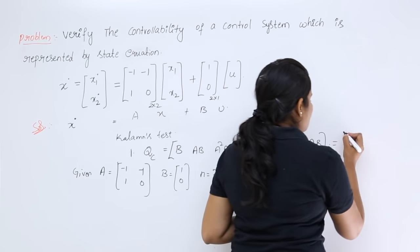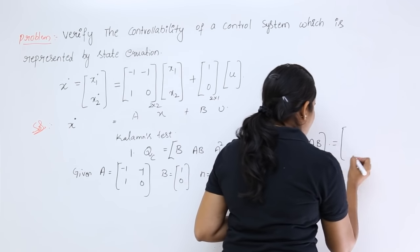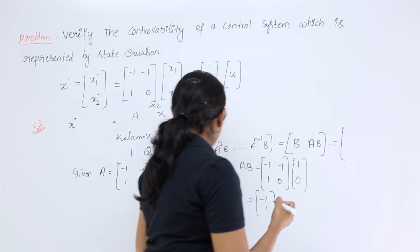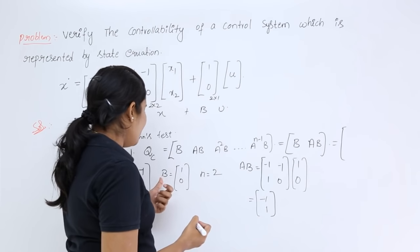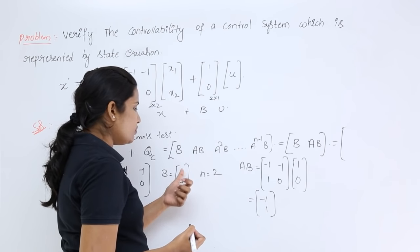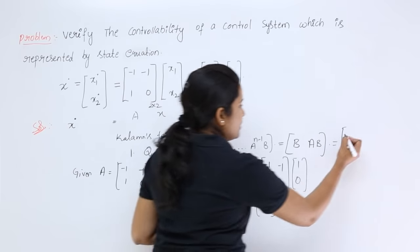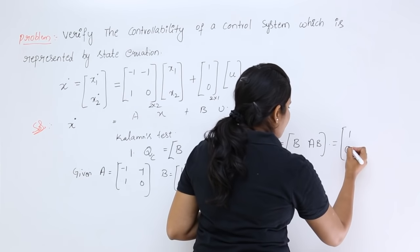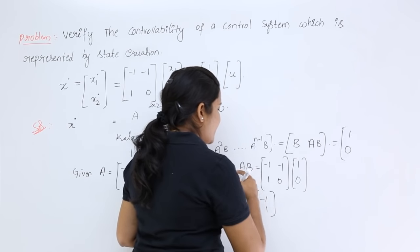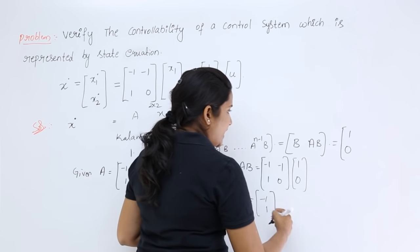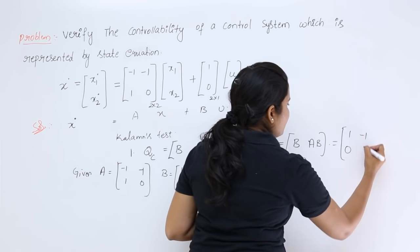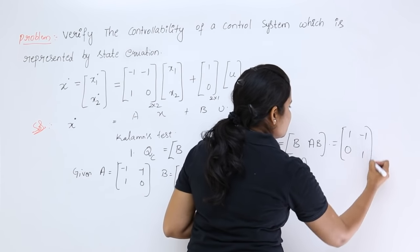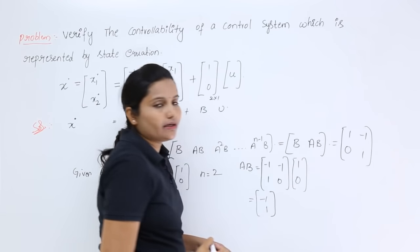We now have all the components. B = [1; 0] and AB = [-1; 1]. So the controllability matrix QC = [B | AB] = [1, -1; 0, 1].